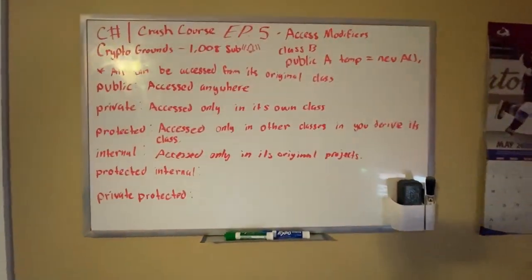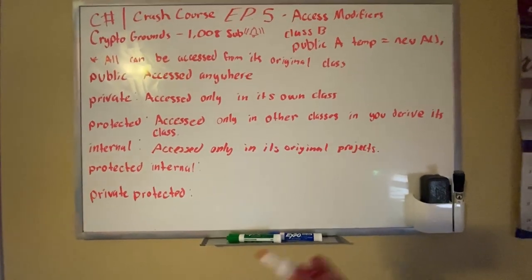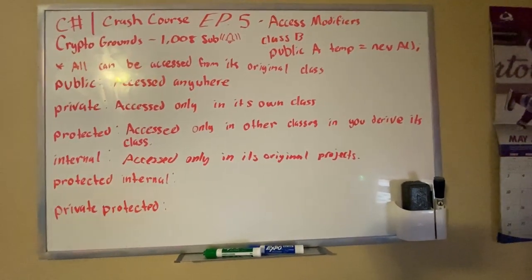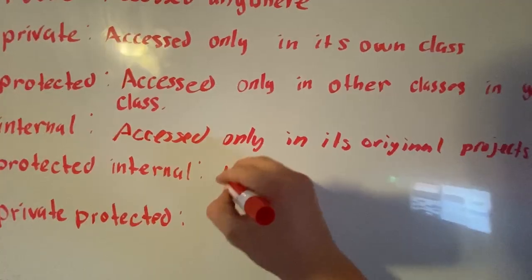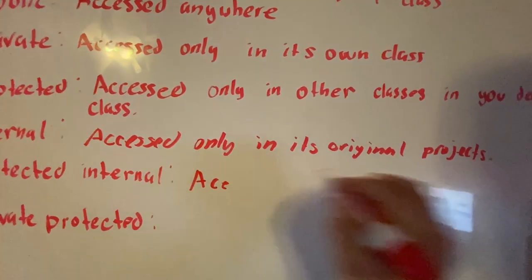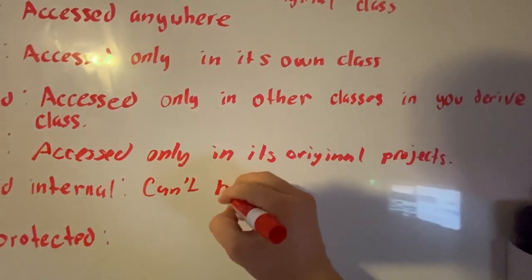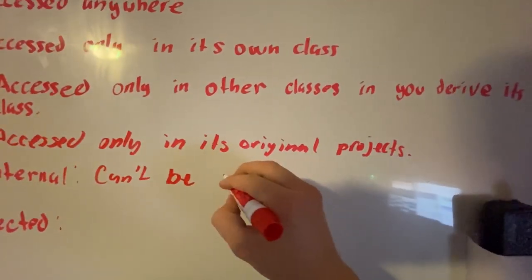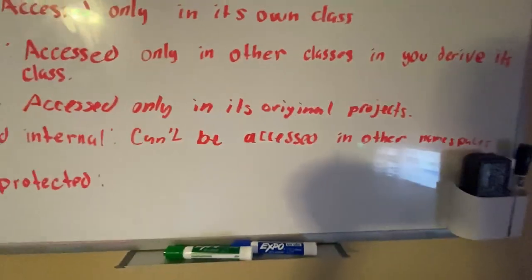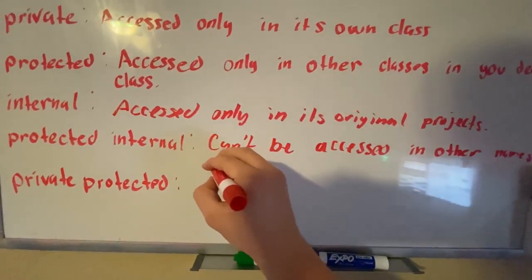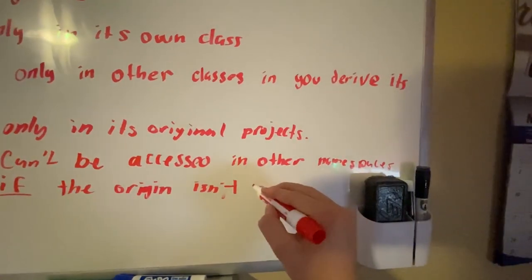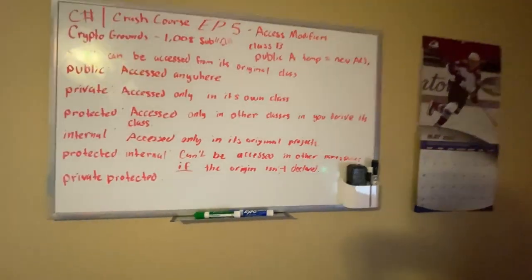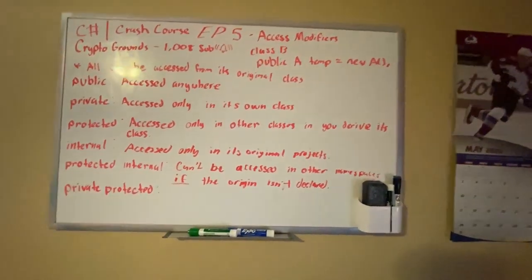Protected internal is basically where you can access the class or variable as long it's derived in the project or the other namespace where it's being accessed from. I'm just going to write down where it can't be accessed. Protected internal can't be accessed in other namespaces if the origin isn't declared. So basically it can only not be accessed if you're using it in another project and you are not declaring the class.